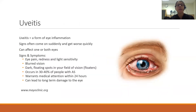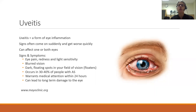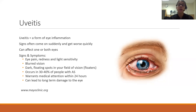Eye inflammation — one term for it is uveitis — often comes on very suddenly and gets worse quickly. It can affect one or both eyes, and you would feel a very painful, red, and light-sensitive eye with some blurred vision and perhaps dark floaters in your field of vision. It can occur in up to 30 to 40 percent of patients who have ankylosing spondylitis, so it's something to be on the lookout for. It warrants prompt medical attention and is usually treated with topical steroids; if left untreated it can lead to long-term damage to the eye.